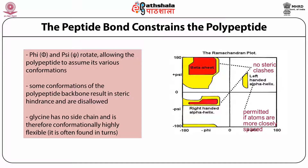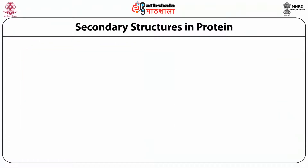The Ramachandran plot can also be presented in terms of allowed and disallowed regions. Only certain values of phi and psi are allowed, shown in the red and yellow regions. The white region does not allow secondary structure formation — such combinations of phi and psi values are not possible.